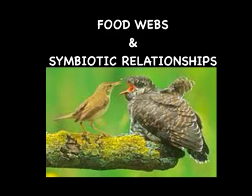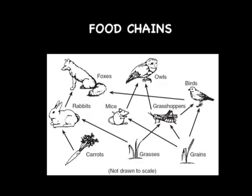Today we're going to talk about food chains, food webs, and symbiotic relationships. A food chain shows how the energy in food is passed from one organism to another in an ecosystem. The arrows shown in a food chain indicate the direction of energy flow.